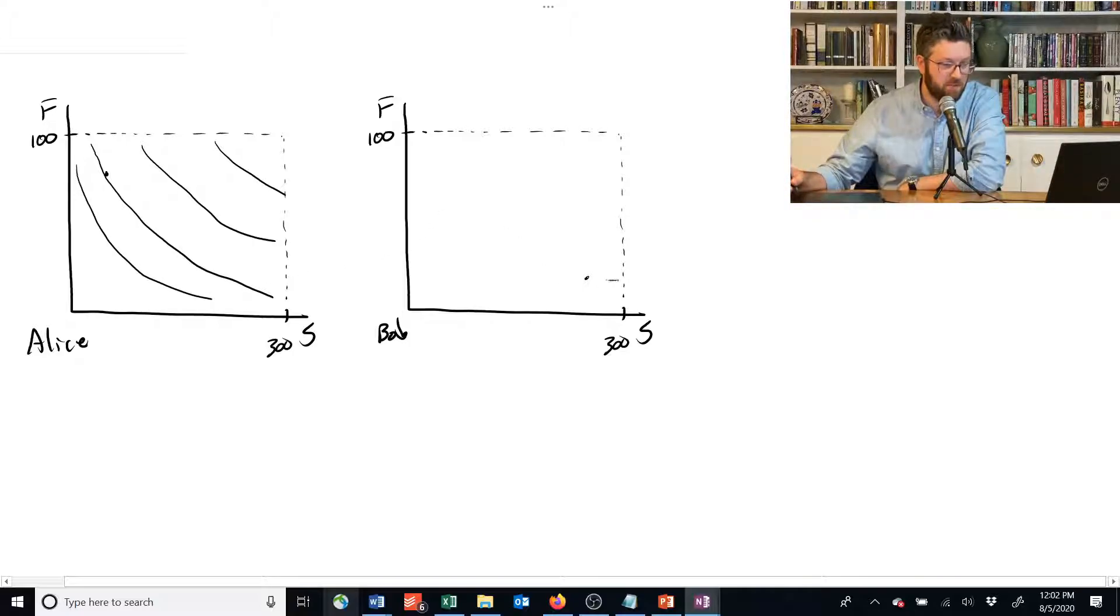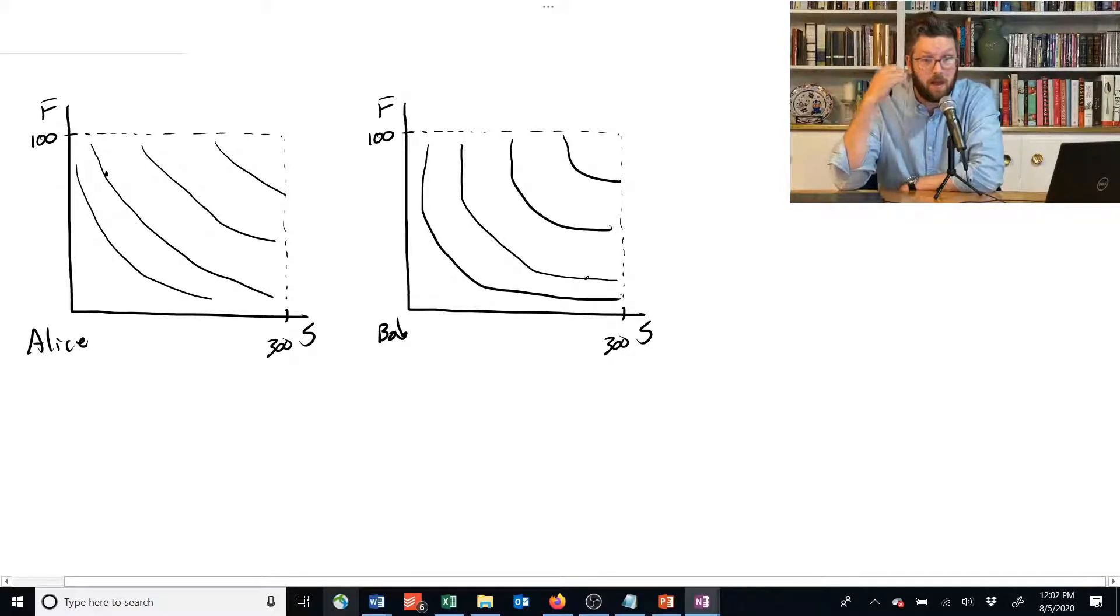And let's give Bob something closer to perfect substitutes. So he's got a real kind of big curve here. So they have sort of different preferences, and they have different allocations to start with.